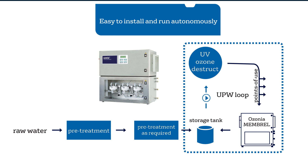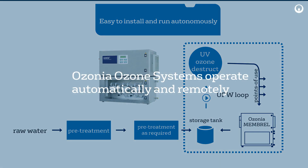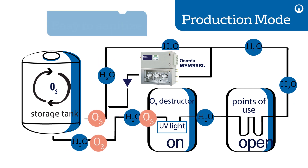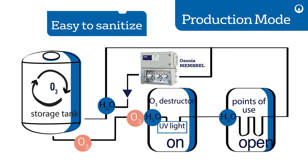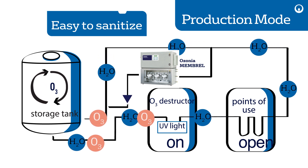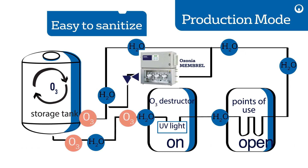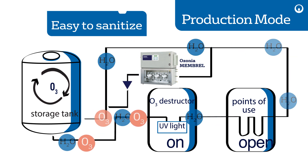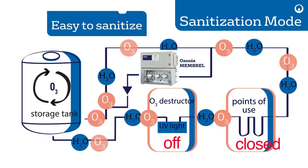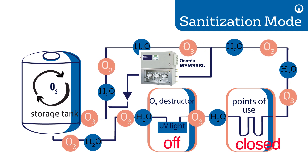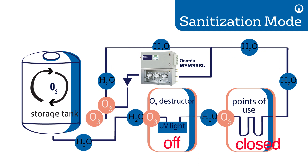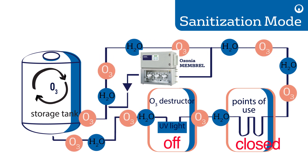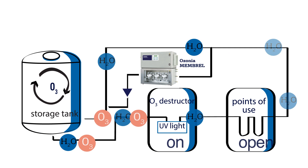Ozonia ozone systems operate automatically and remotely. In normal production mode, ozone is utilized to continuously sanitize the majority of the ultrapure loop, and an inline UV removes the ozone just ahead of production. For complete system cleaning, switching to sanitization mode turns off the inline UV and ozone is allowed to contact the entire system. Returning to production is as easy as turning back on the ozone destructor.